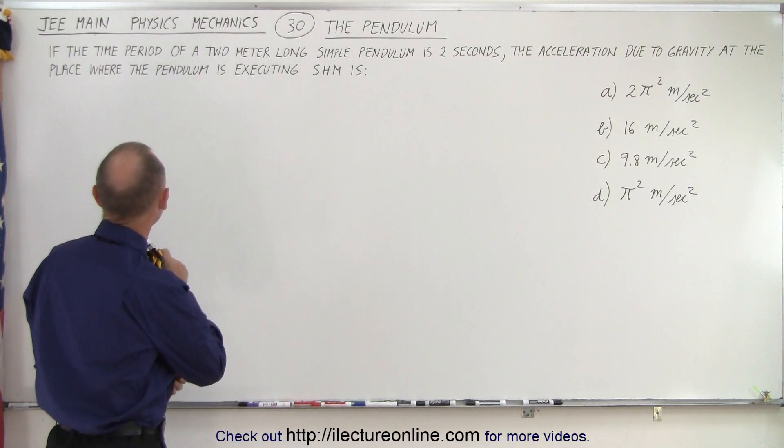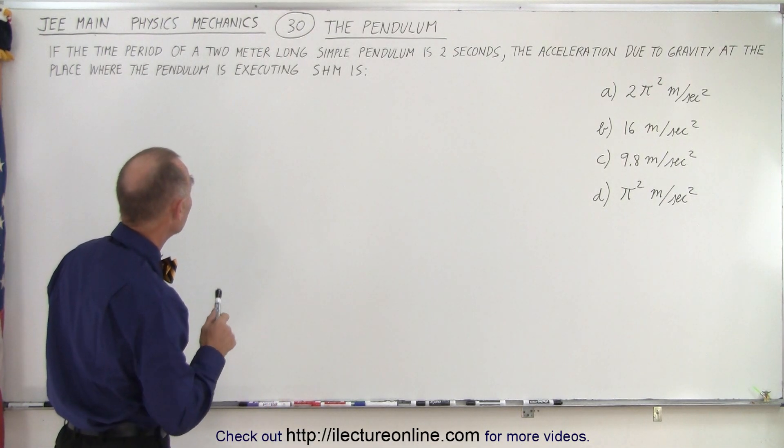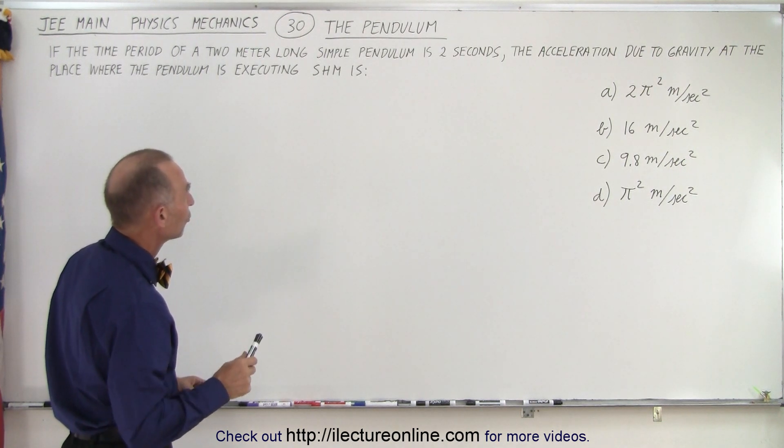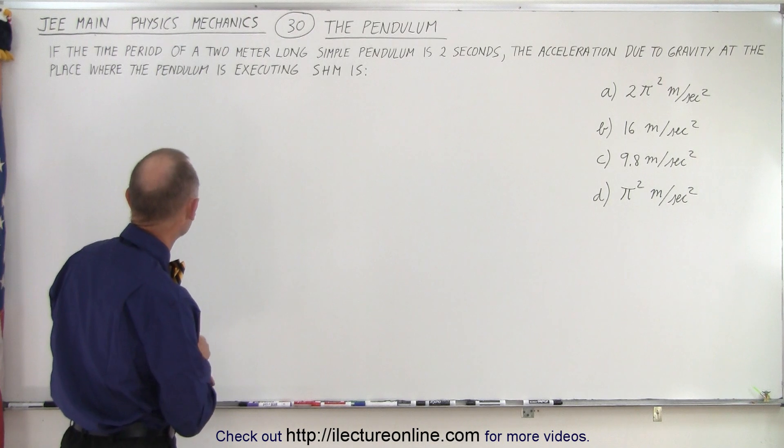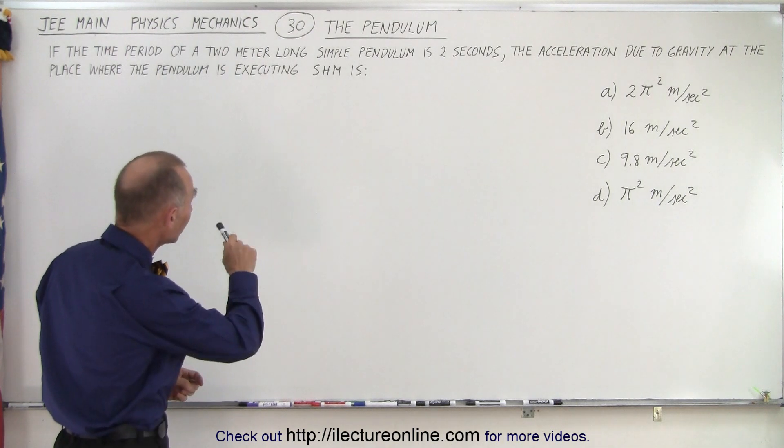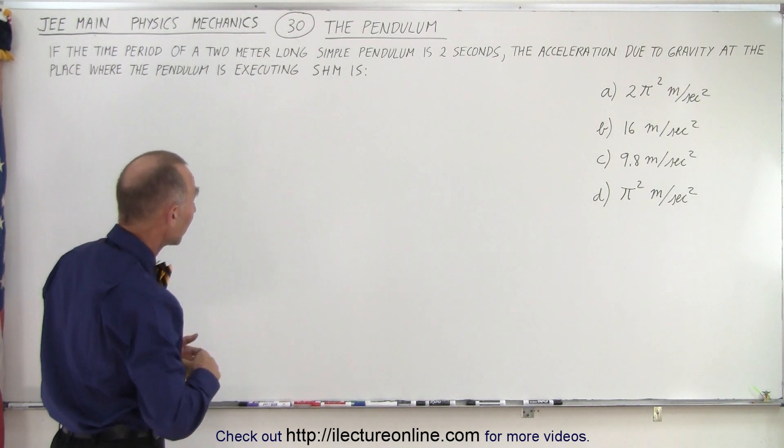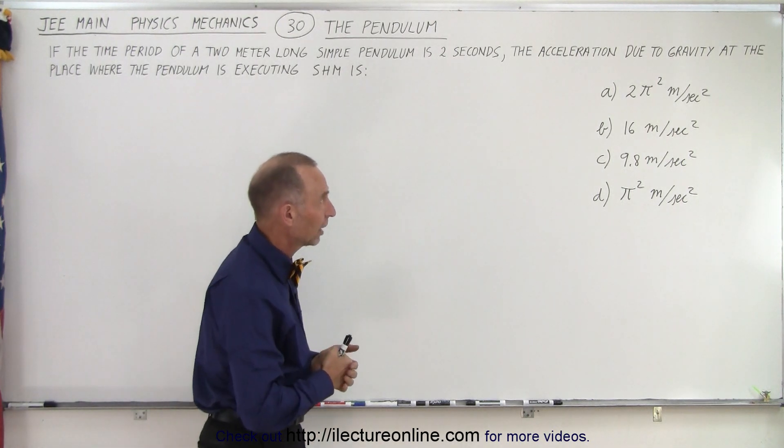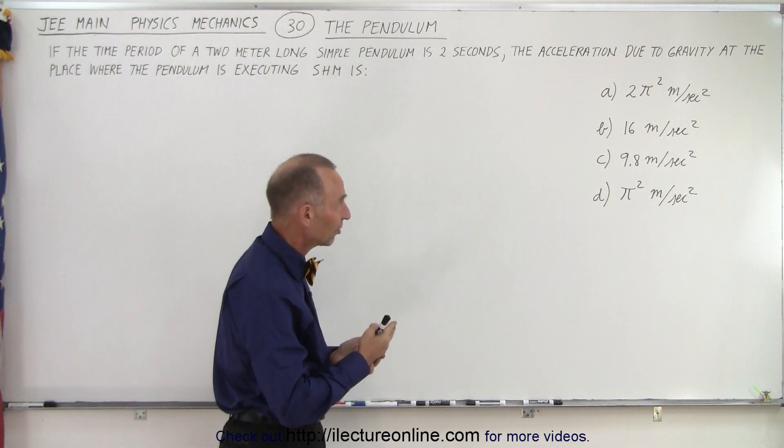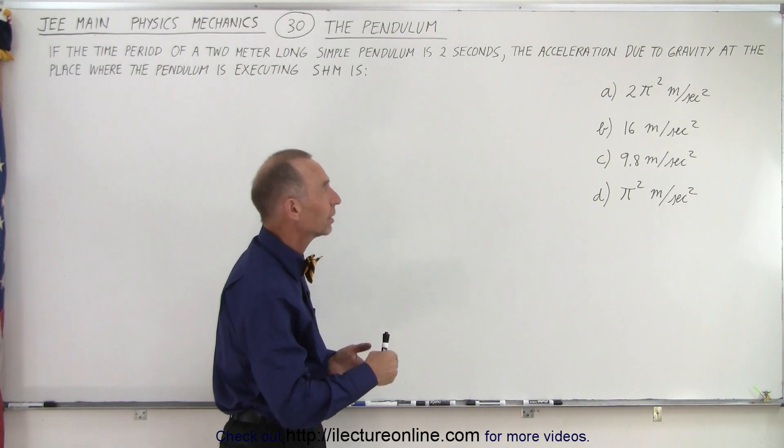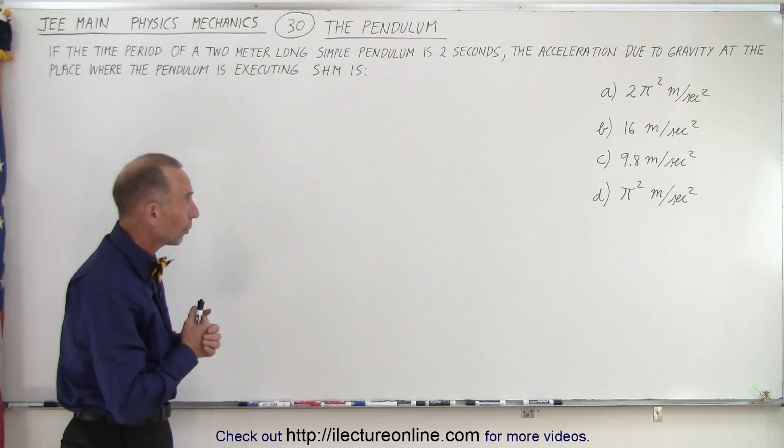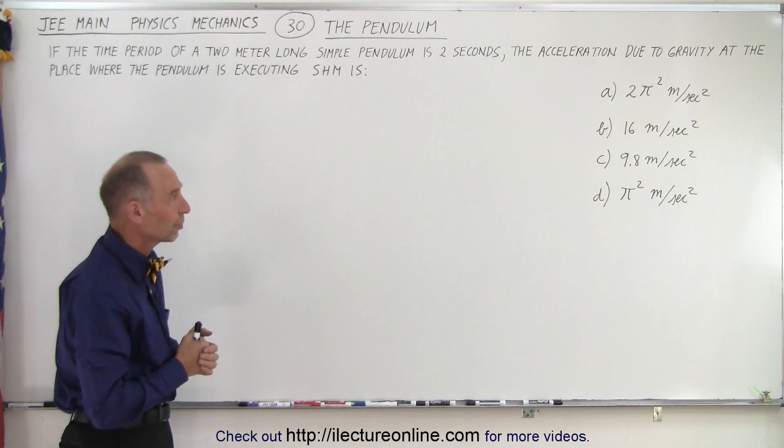If the time period of a 2 meter long simple pendulum is 2 seconds, the acceleration due to gravity at the place where the pendulum is executing simple harmonic motion (that's what SHM means) is... and they give us four possible answers. It's either 2π² m/s², 16 m/s², 9.8 m/s², or π² m/s². Of course, we're dealing with the acceleration, so we have units of meters per second squared.